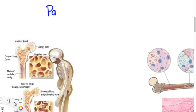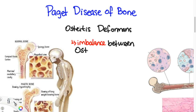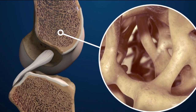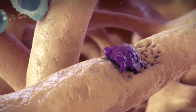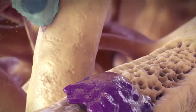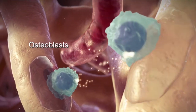Let's talk about Paget's disease of bone, also referred to as osteitis deformans. This is due to an imbalance between osteoclast and osteoblast function. Normally, bones undergo a continuous process of remodeling: osteoclasts resorb bone, while osteoblasts lay down bone.